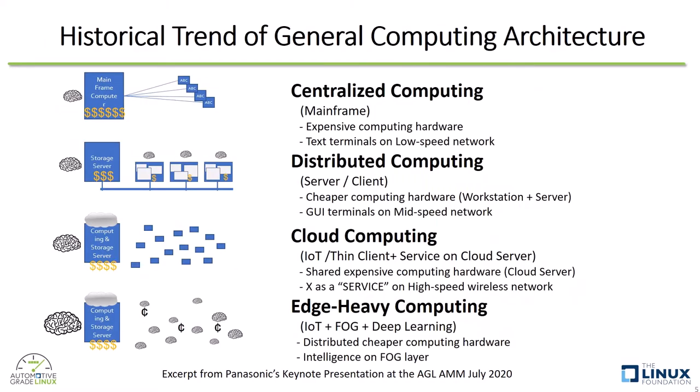Now, let's take a look at the overall history of virtualization. In the historical trend of general computing architecture, it has been going back and forth between centralized and distributed architecture, driven by the fluctuation of the cost and performance of processing, memory and communication. This means there is no constant optimal answer.